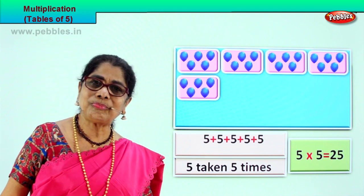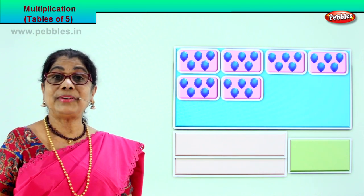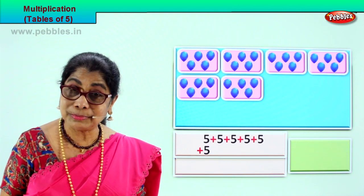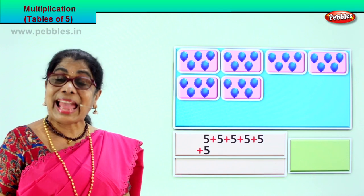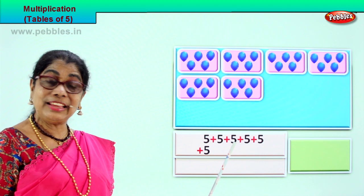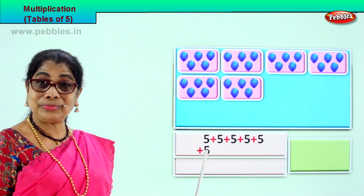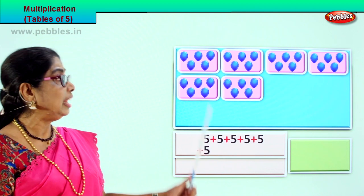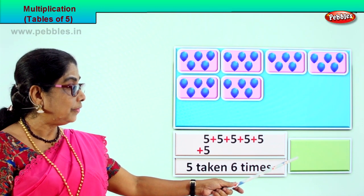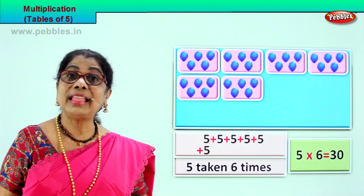Let's look at another grouping of five — one, two, three, four, five, six. Here you have five taken six times. Multiplication is repeated addition. So we will add five six times: five plus five, ten. Ten plus five, fifteen. Fifteen plus five, twenty. Twenty plus five, twenty-five. Twenty-five plus five, thirty. Five taken six times. Five into six is equal to thirty. Five sixes are thirty.